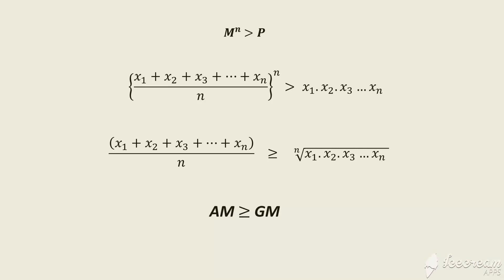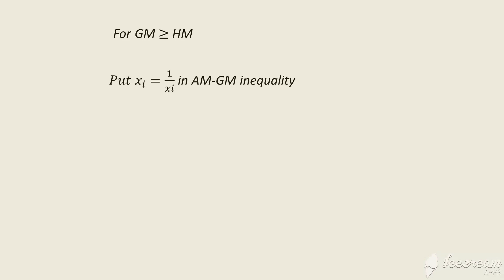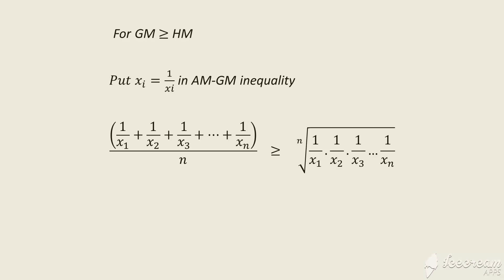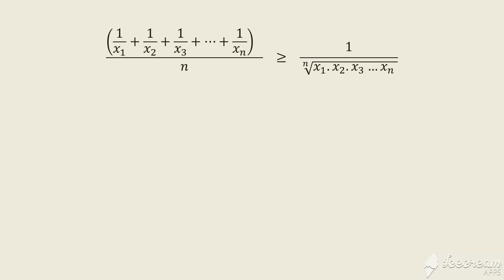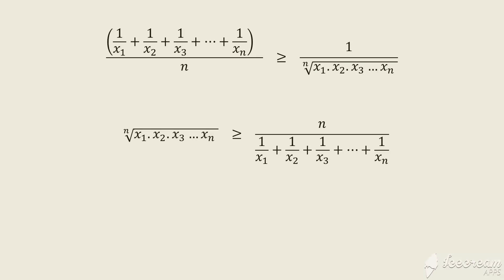Now let's move to the GM-HM relation. We substitute xᵢ → 1/xᵢ in the AM-GM inequality. By doing that we get the relation, and after simplifying and taking reciprocals on both sides — which requires flipping the inequality sign — the left-hand side becomes GM and the right-hand side becomes HM. So we have proved that GM ≥ HM. Hence AM ≥ GM ≥ HM is fully proved.